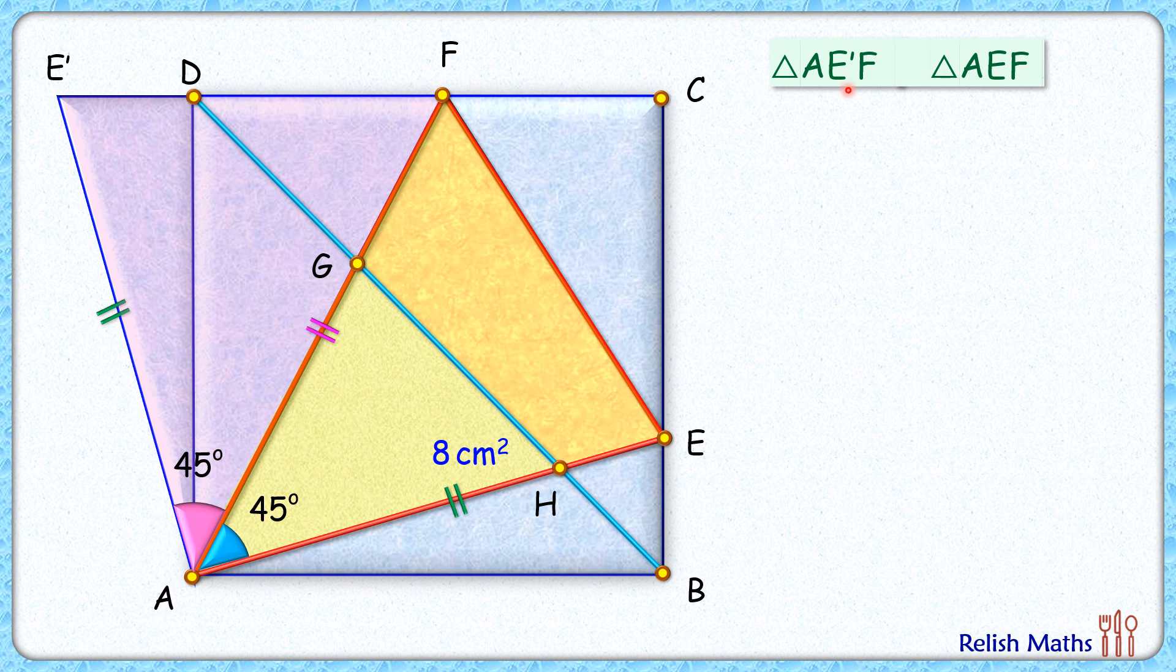Thus by side-angle-side, both triangles are congruent to each other. As the triangles are congruent, the corresponding angles will be equal. So here we can say angle E' will be equal to angle E, and this angle F, if we assume it as beta degrees, then this remaining angle will be beta degrees.